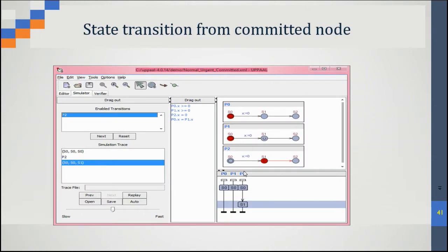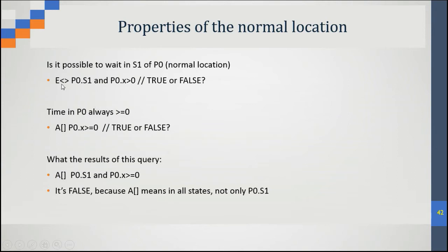This is the simulation of our example. For example, here we have process B and B0 is the process. We want to ask about the value of x — x is the clock — in process B0, in a specific location: is the value of x greater than zero?